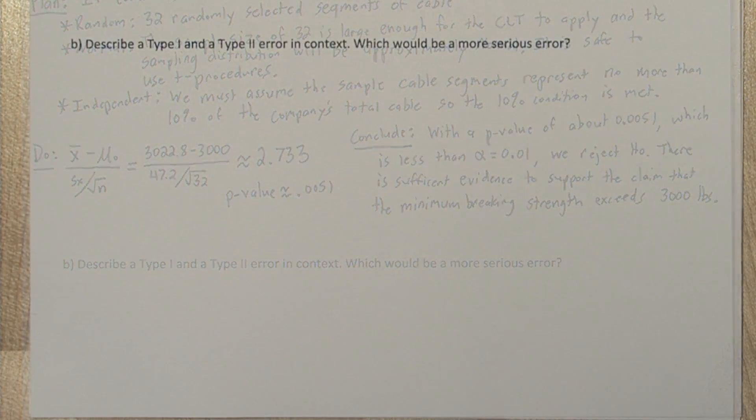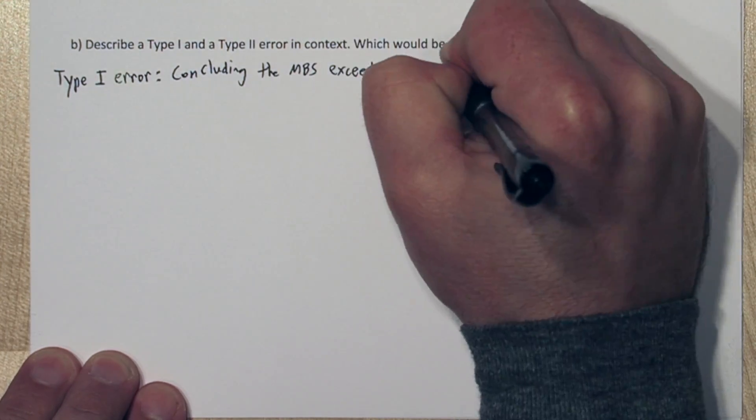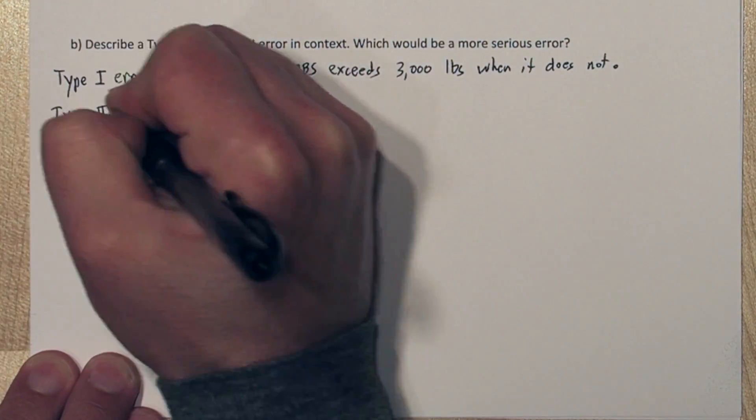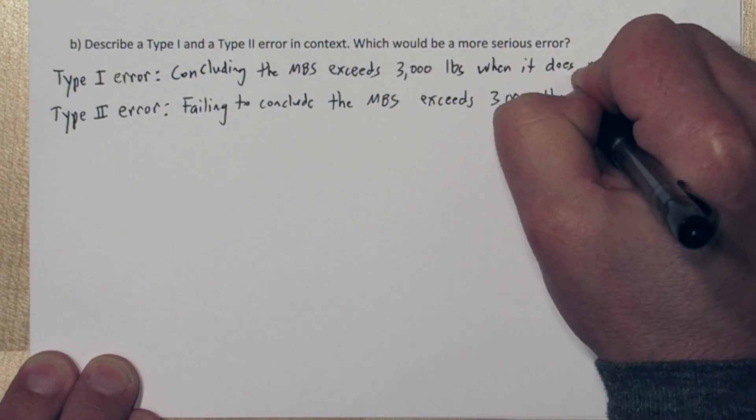A type 1 error would be concluding the mean breaking strength exceeds 3000 lbs when it does not. A type 2 error would be failing to conclude the mean breaking strength exceeds 3000 lbs when it does.